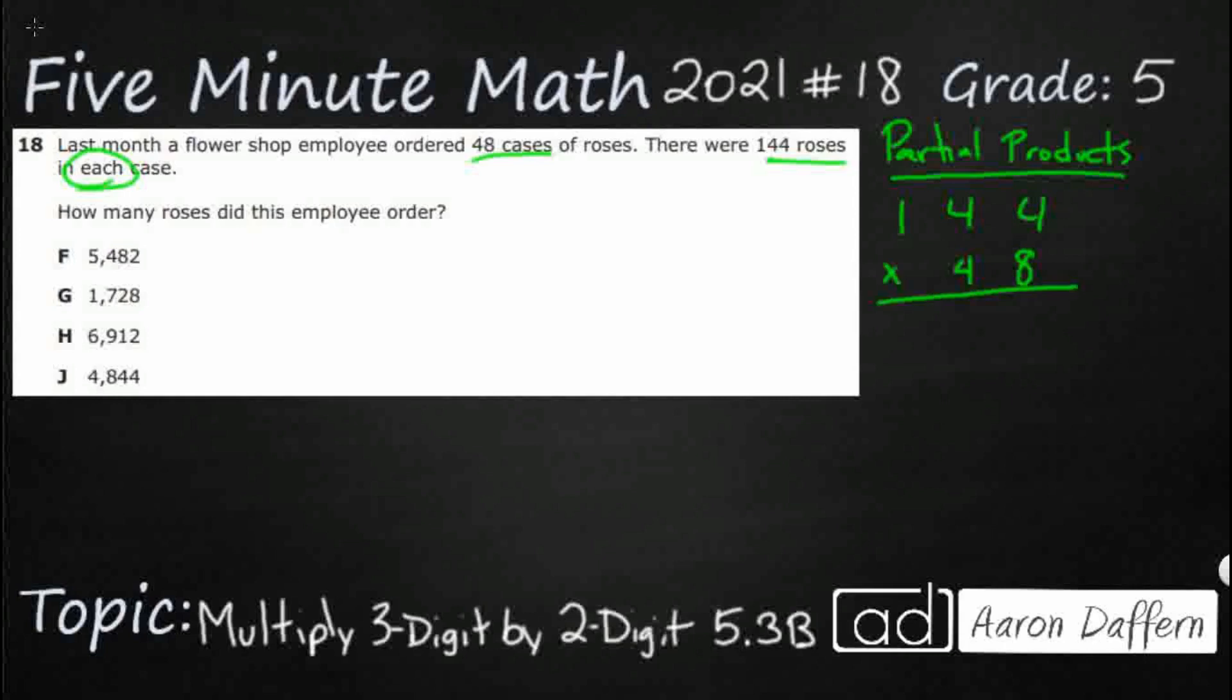So we have 144 times 8. We always start with the ones digit down in the bottom row. We multiply that by the ones digit over and moving over to the left on the top row. So 8 times 4 is 32. So we're just going to write 32. 8 times 4 is still 32.